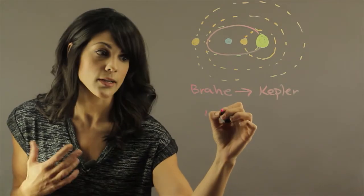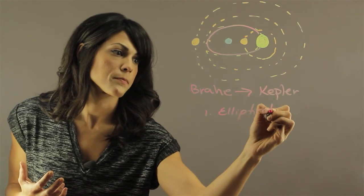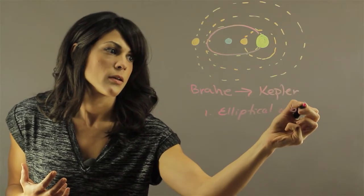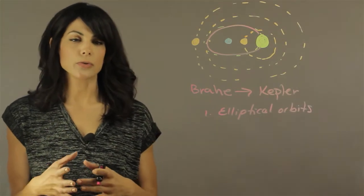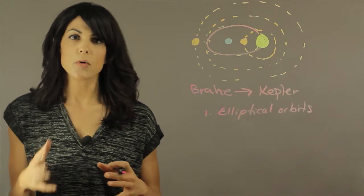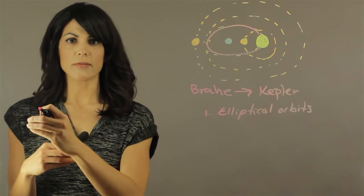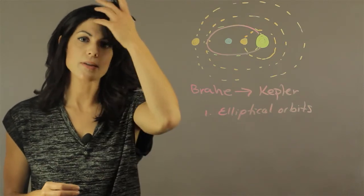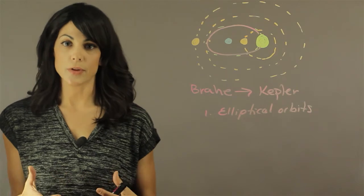The first law is that planets orbit in ellipses—they have elliptical orbits. This took him a while because everybody back then believed that everything was circular and perfect. It took him a while to understand why planets would suddenly move a lot faster in some regions than others. Eventually, he figured out that the orbits were just not perfectly circular—they're elliptical.